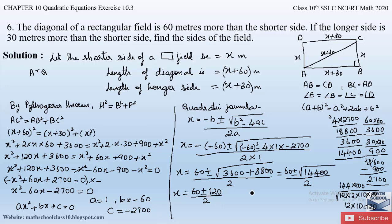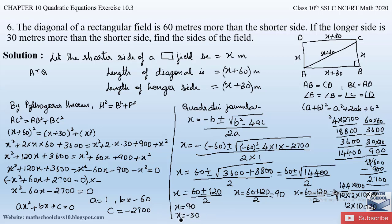First root: x = (60 + 120) / 2 = 180 / 2 = 90. Second root: x = (60 − 120) / 2 = −60 / 2 = −30.